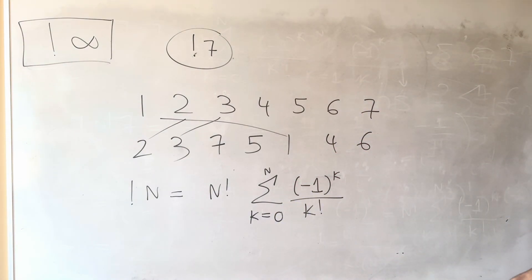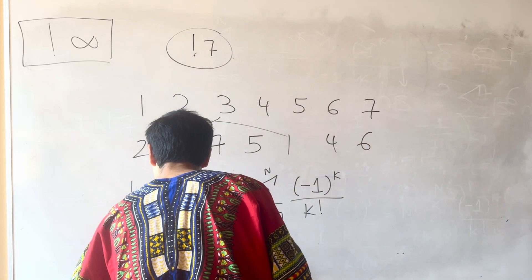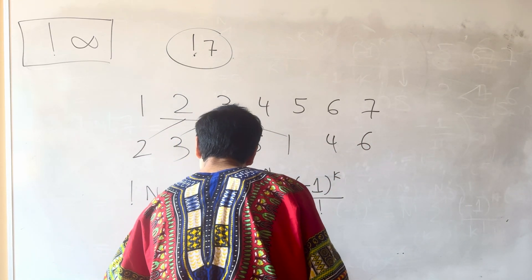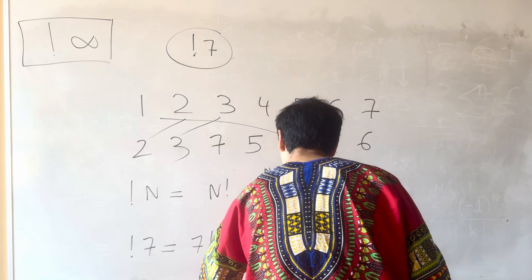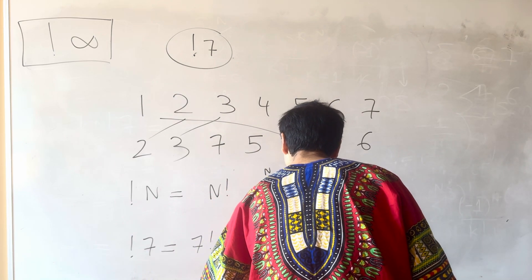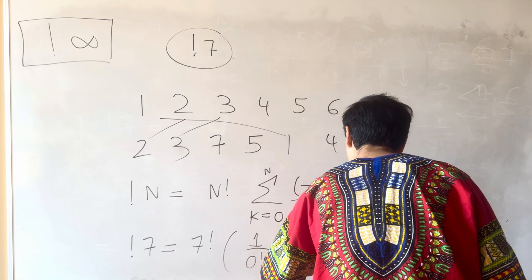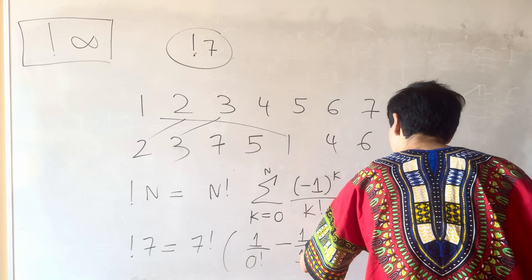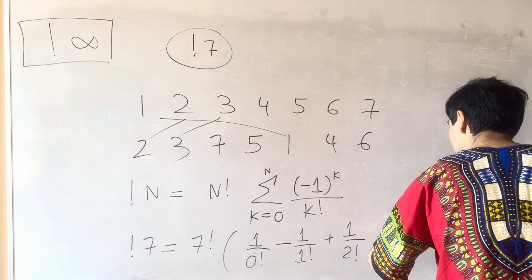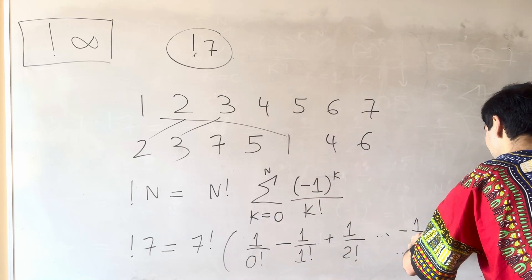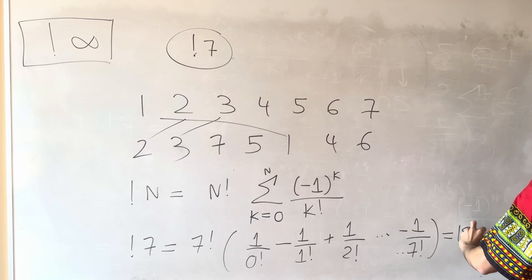So for instance, 7 bang would be 7 factorial times 1 over 0 factorial, minus 1 over 1 factorial, plus 1 over 2 factorial, dot dot dot, minus 1 over 7 factorial, which is 1854.